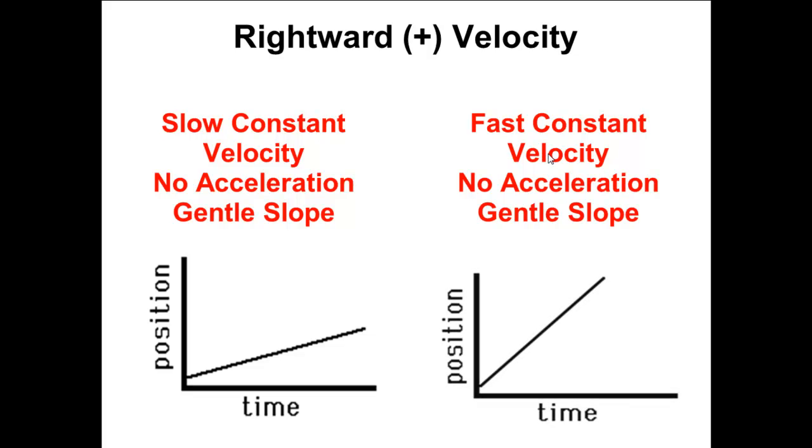You saw this before here. Straight line. Straight line is going to mean constant velocity. Straight line over here, constant velocity. Difference is the slope. This is a slow constant velocity because I have a gentle slope. And this is a fast constant velocity because,